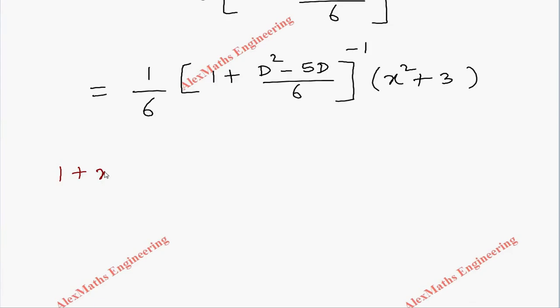Using the binomial expansion: (1 + x)^(-1) = 1 - x + x² - x³ + ... Here this entire term is treated as x. Now we have 1/6, bracket open.